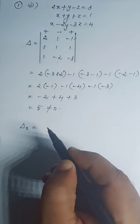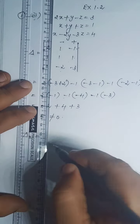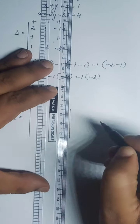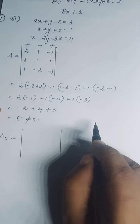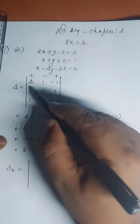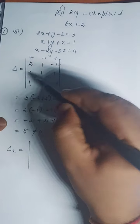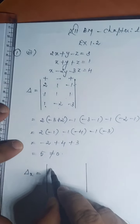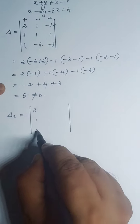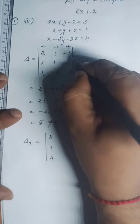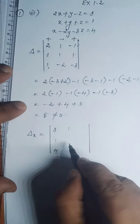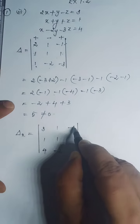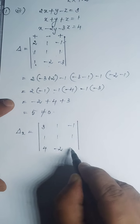We have to find out del x first. Del x — that is also a 3 by 3 minor. The first column of delta should be replaced by the constants 3, 1, and 4. The second column and third column of delta remain as they are: 1, 1, minus 2 and minus 1, 1, minus 3.